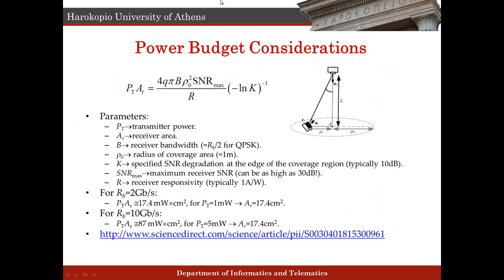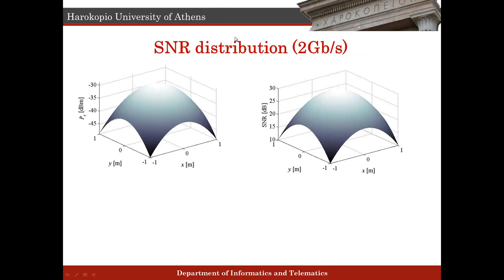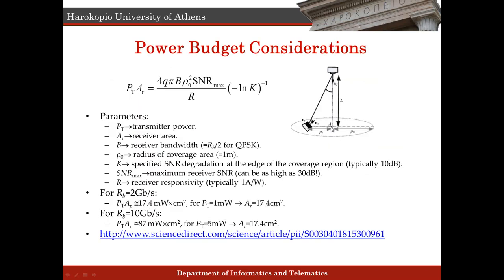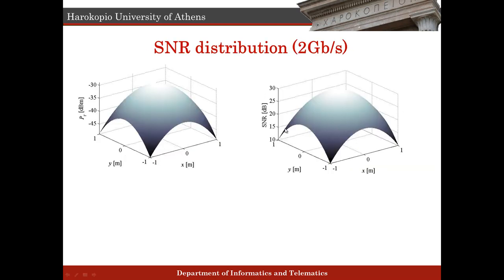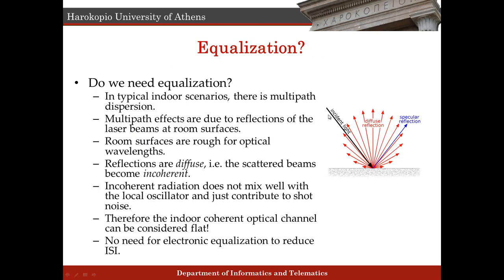Regarding the signal-to-noise distribution across the coverage area: we show the received power in dBm and the SNR. It has a peak of about 30 dB at point A, which is the point in the coverage region with the maximum SNR, and it quickly drops to 10 dB as you move away. The 20 dB limit corresponds to approximately a 1-meter radius circle.